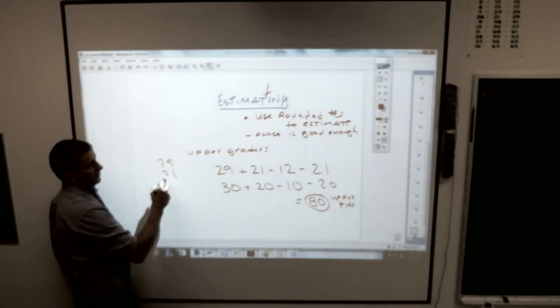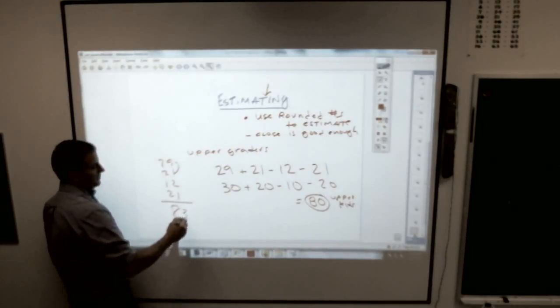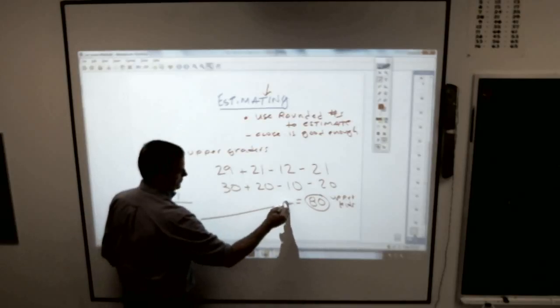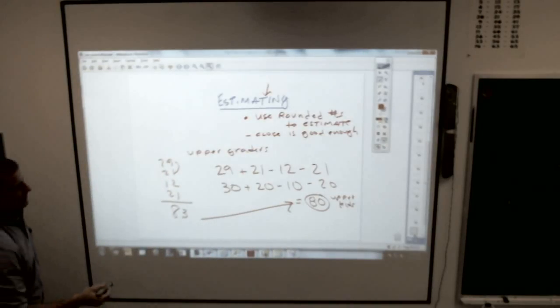What actually was the real number? Just for fun. 29 and 21 and 12 and 21. It's actually 83, I believe. But 80 is awful close. And that might be a good amount for the thing that you're doing.